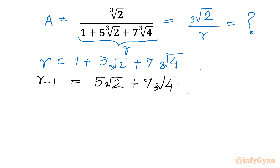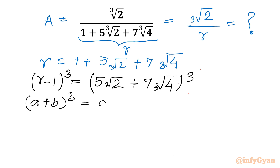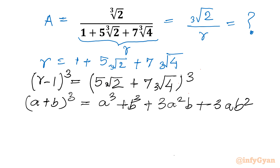Now consider cubing both sides. We have the formula: (A + B)³ = A³ + B³ + 3A²B + 3AB², and when there is a minus sign, (A − B)³ gives minus B³ and minus 3A²B. Let us write both formulas and apply them.